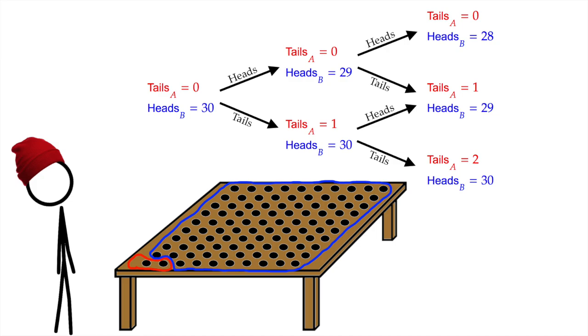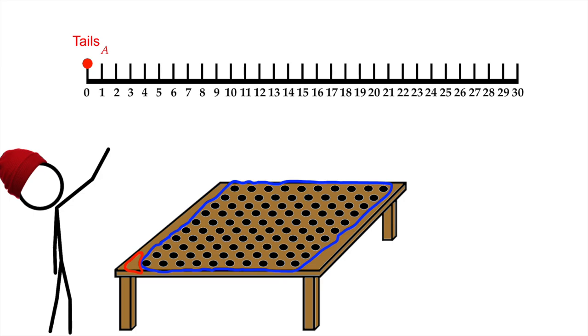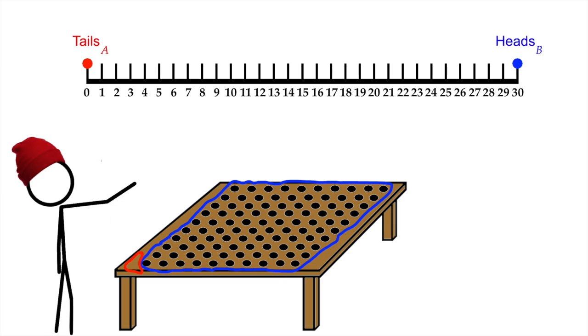I can see it now, can you? Let's reset. So, number of tails in A begins at 0, and number of heads in B begins at 30. So, at the start, the distance between them is, of course, 30.